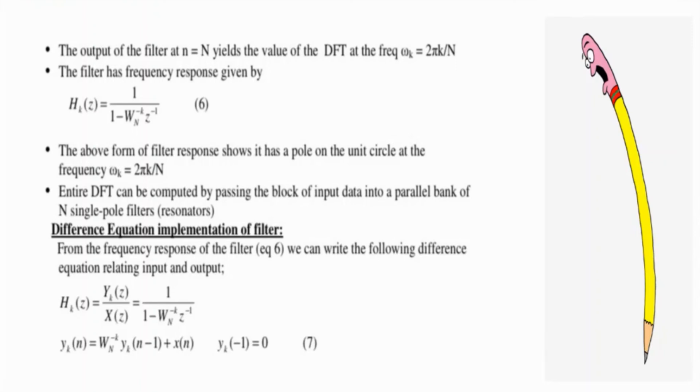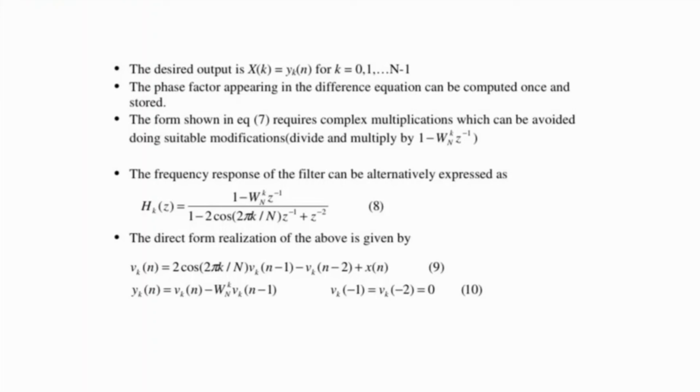Difference equation implementation of filter: from the frequency response of the filter, you can write the following difference equation relating input and output. The output X(k) = y_k(N) for k = 0, 1, ..., N-1. The phase factor appearing in the difference equation can be computed once and stored. The frequency response of the filter can be alternately expressed in a form that avoids complex multiplication. The direct form realization of this algorithm is given by the equation shown.